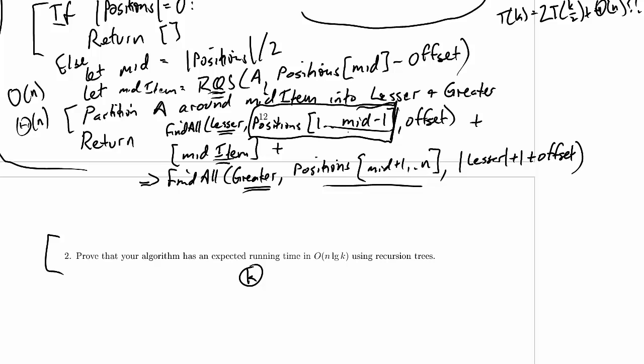Okay, so how much time are we spending in one call? Well, we spend order n, we spend theta n, so we're going to end up spending linear time here. So I'm just going to call that c times n.